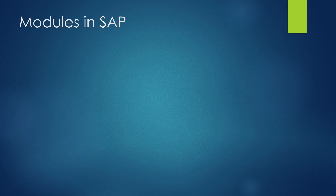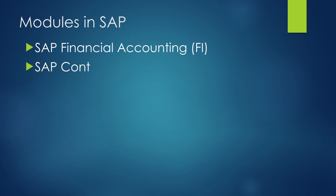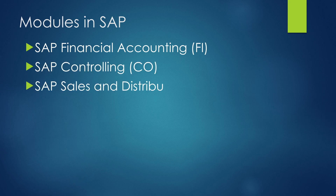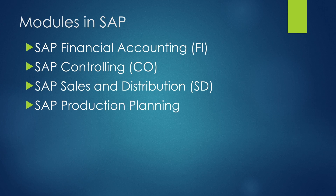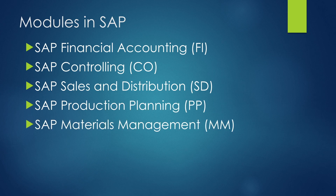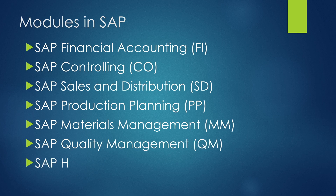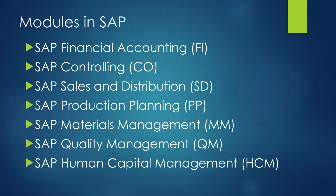What are the different modules in SAP? The first one is Financial Accounting, second is Controlling, third is Sales and Distribution, fourth is Production Planning, fifth is Materials Management, sixth is Quality Management, and seventh is Human Capital Management.